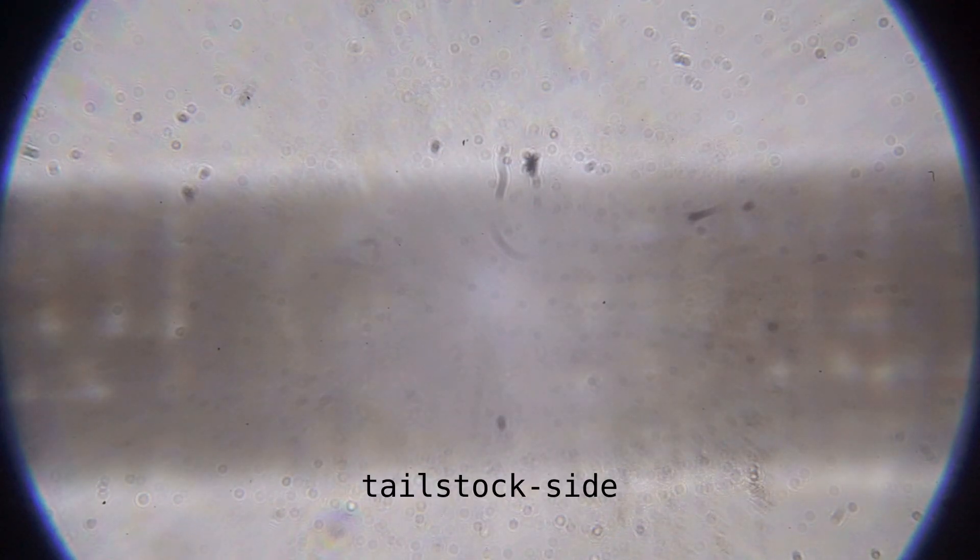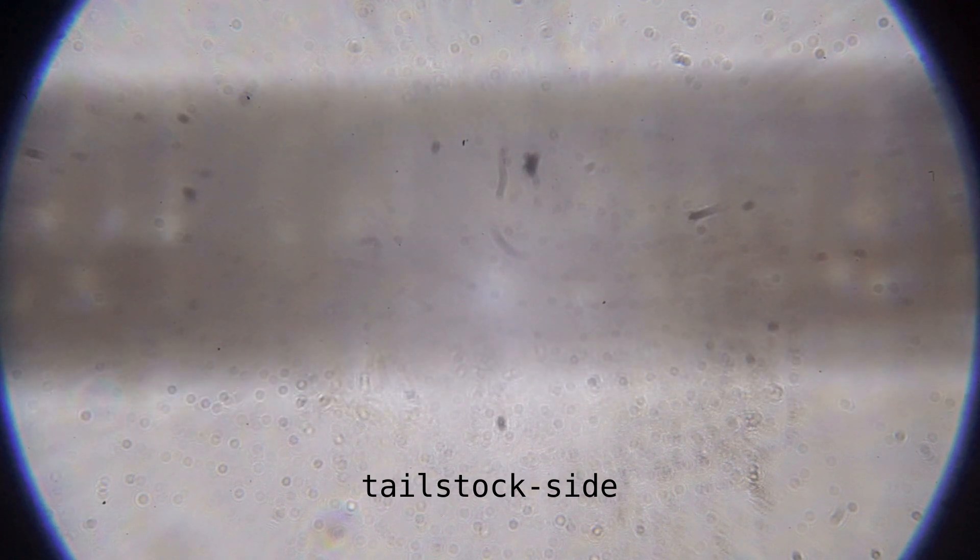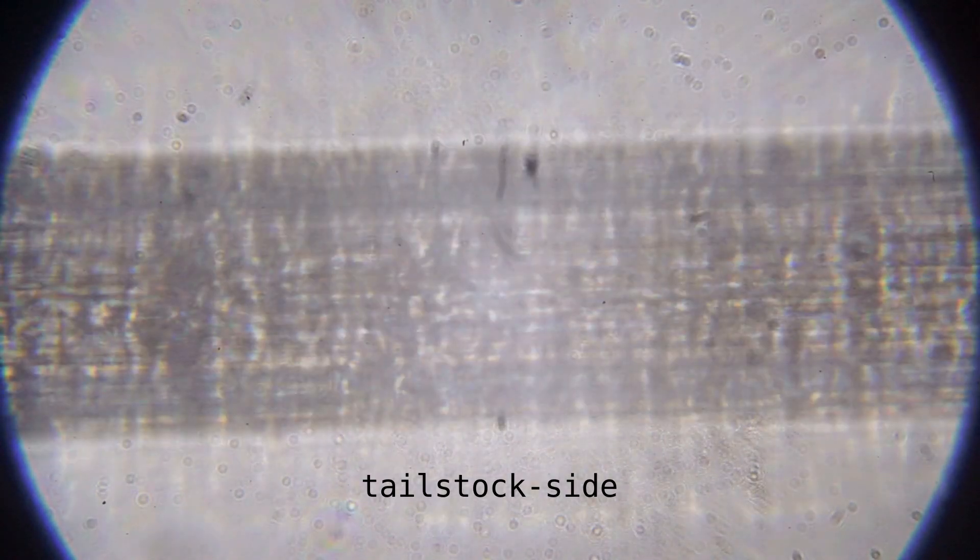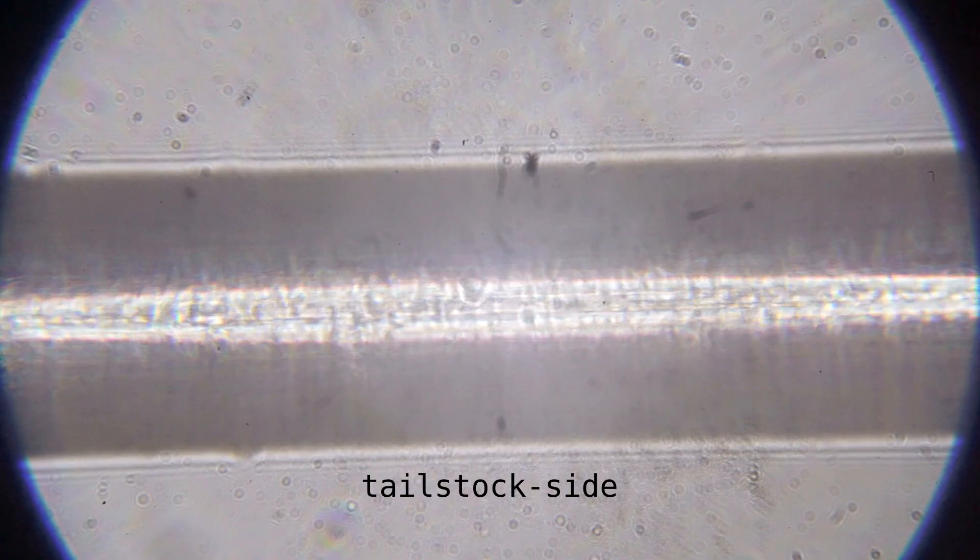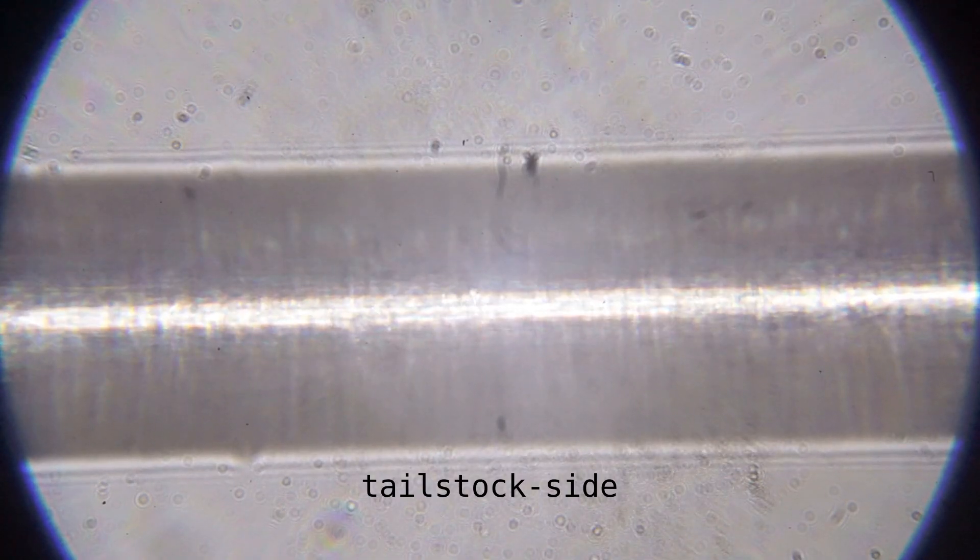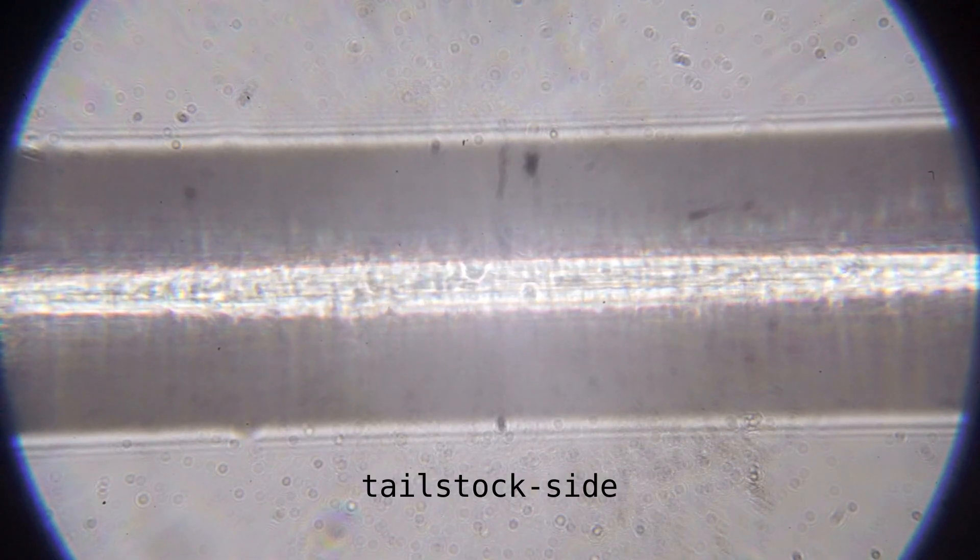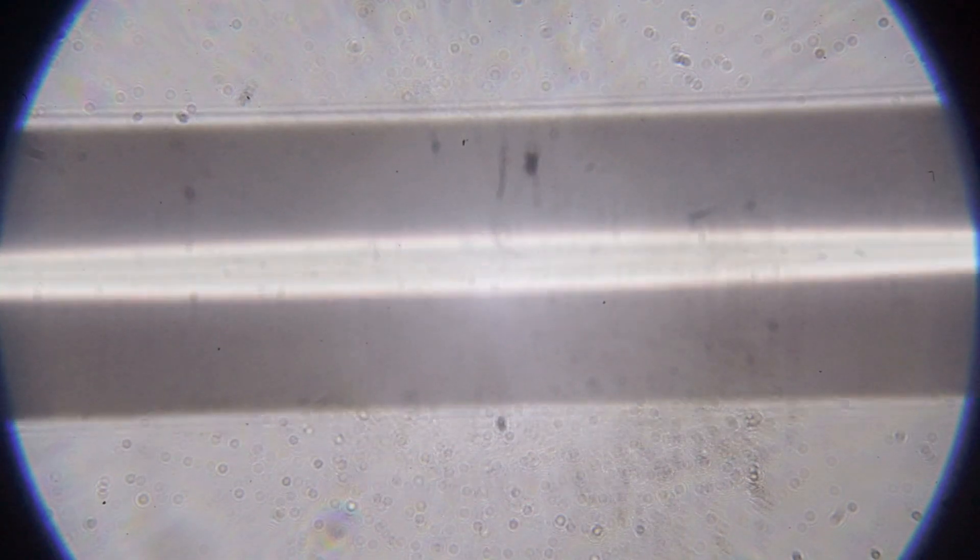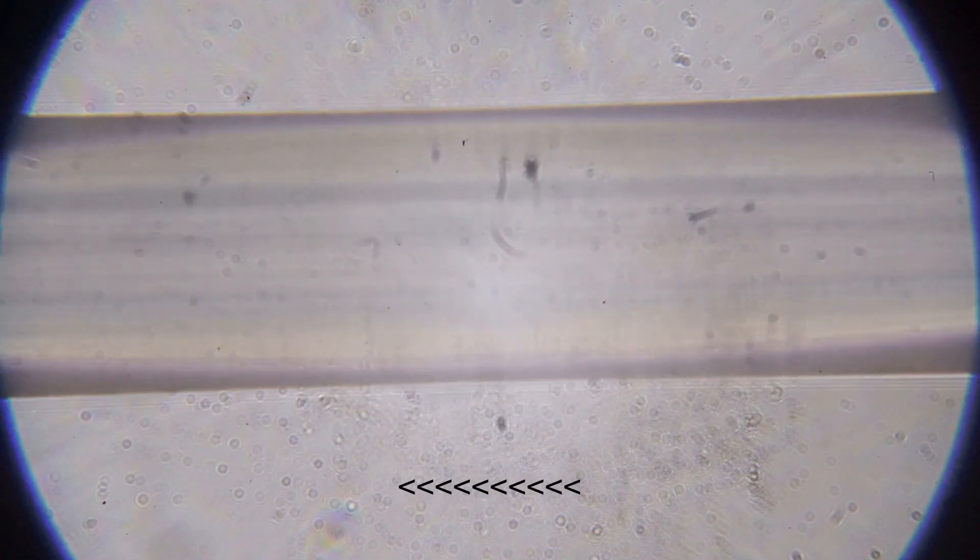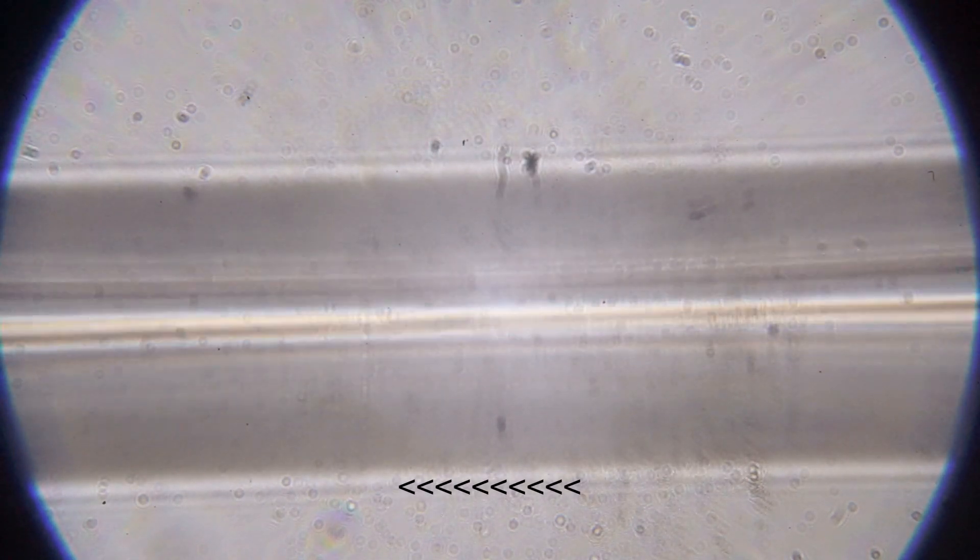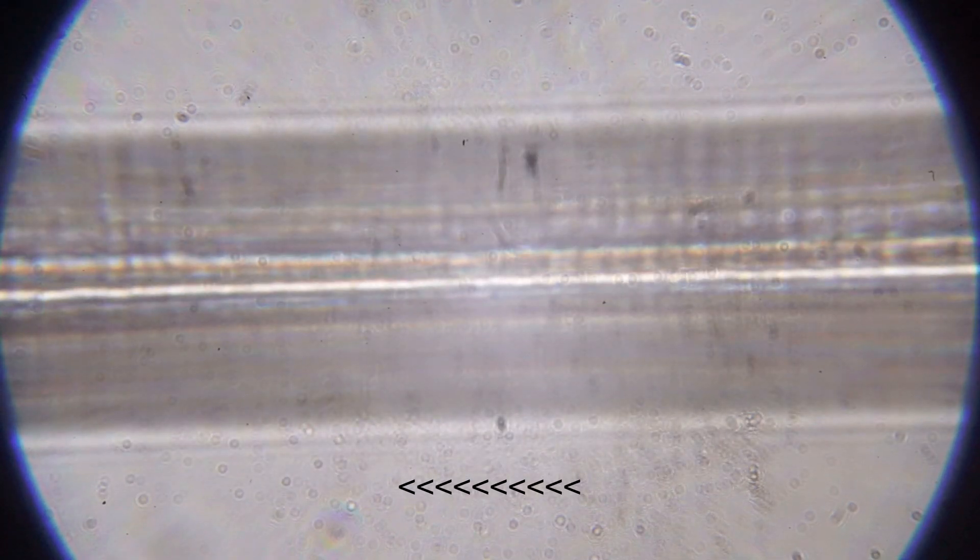And on the tailstock side. When moving back to the headstock you can already see that the horizontal position of the wire is very stable, but the focal plane varies.